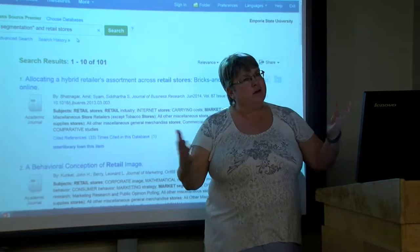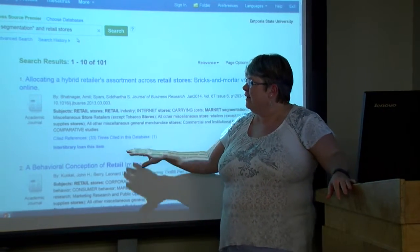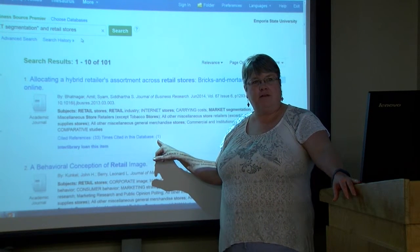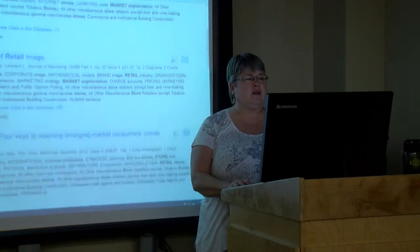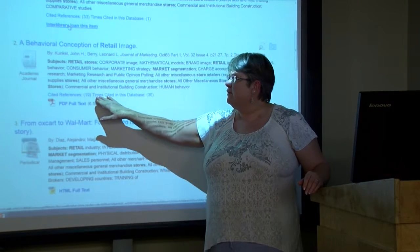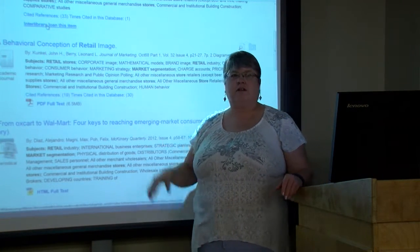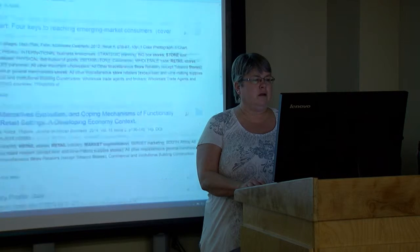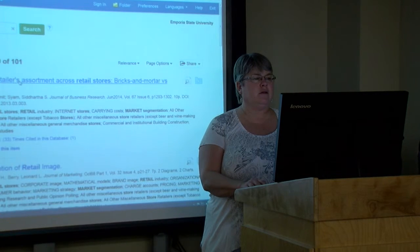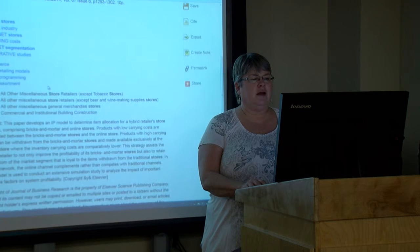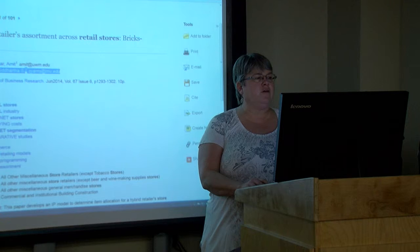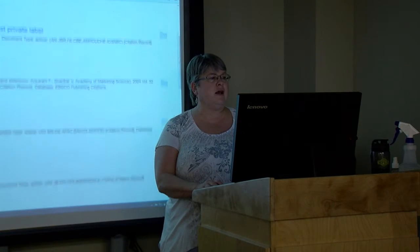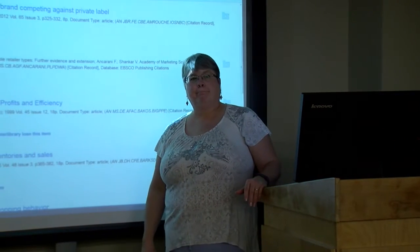This one has 33 cited references and it's been cited one more time in this database. This one has 19 cited references and it's been cited by 30 other articles in this database — so that gives you a lot more. Clicking into an article to look at the abstract and see if it's useful, then over here I can see what articles this one is citing — these are the 33 articles that one is citing. Does that help? Yes.